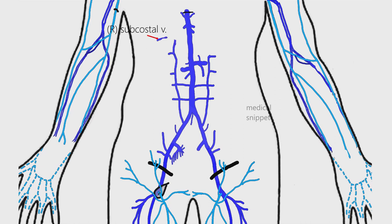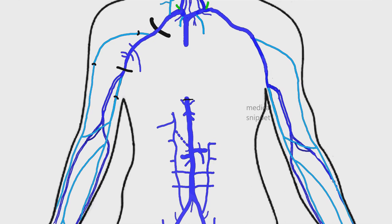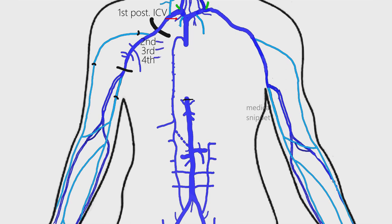The right subcostal vein joins with the right ascending lumbar vein to form the azygos vein. Sometimes the azygos vein arises from the back of the inferior vena cava as the lumbar azygos vein. The azygos vein ascends in the posterior mediastinum and opposite T4 vertebra, arches forward and drains into the superior vena cava. The tributaries of the azygos vein are the posterior intercostal veins of the right side, except the first vein, which drains into the right brachiocephalic vein. The second, third, and fourth posterior intercostal veins unite to form the right superior intercostal vein, which drains into the azygos vein. The rest of the posterior intercostal veins drain separately into the azygos vein.